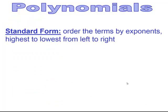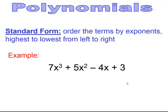When we are talking about standard form, standard form for polynomials means ordering the terms by exponents — from the highest exponent down to the constant, working left to right. For example: 7x³ + 5x² − 4x + 3. Standard form is important, so make sure you know how to do it.